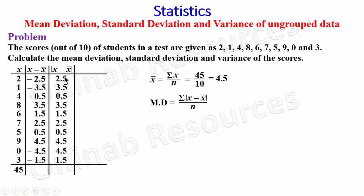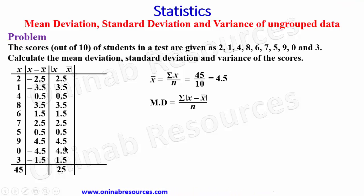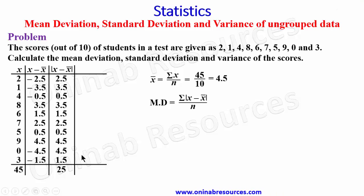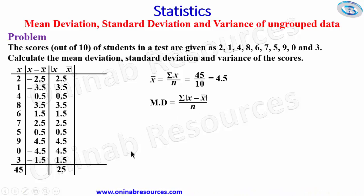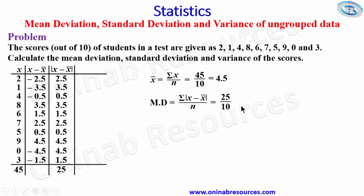We now sum them up. Summing the absolute values gives us 25. So substituting into the mean deviation formula, the summation of |x minus x̄| is 25 over n which is 10. So 25 over 10 gives 2.5, which is the mean deviation of the scores.